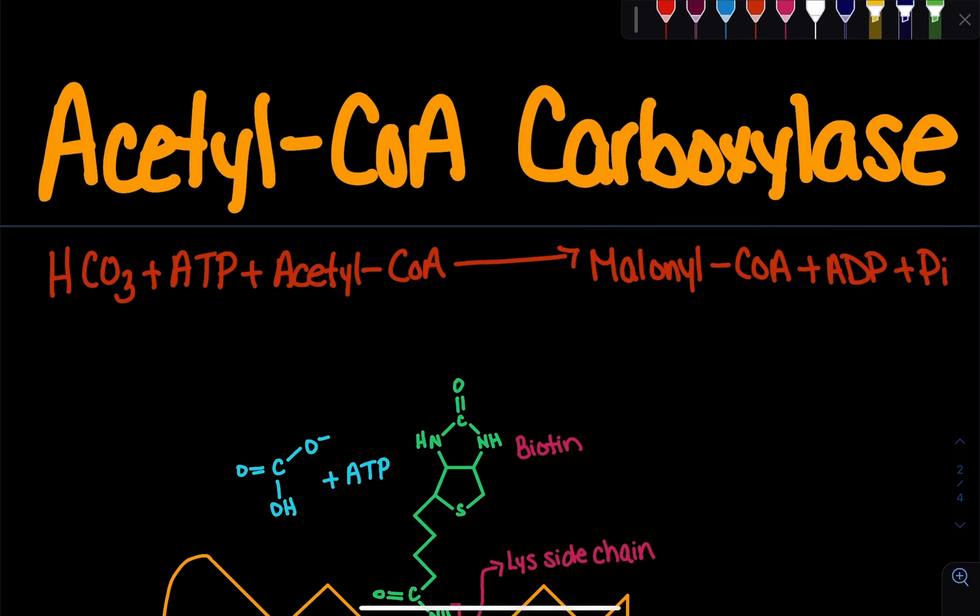What's important to note here is that we're converting acetyl-CoA into malonyl-CoA. Now what's the difference between these two molecules? Acetyl-CoA is a two-carbon molecule, whereas malonyl-CoA is a three-carbon molecule, which means we have to add a carbon. Where is that carbon coming from? It's coming from our bicarbonate.